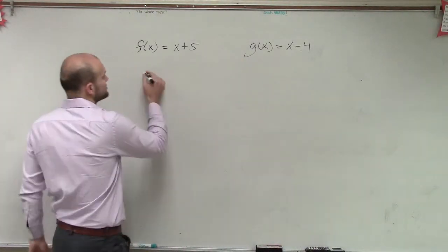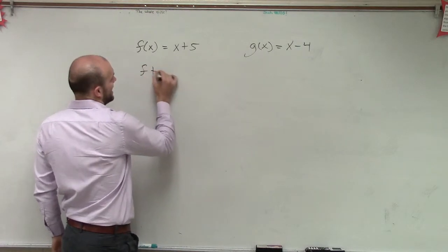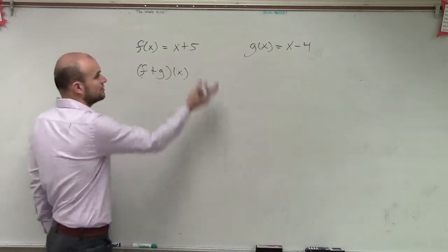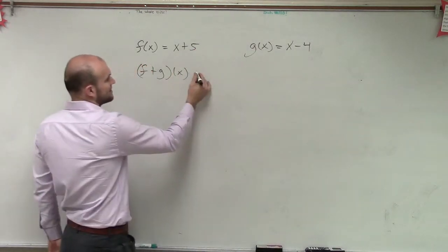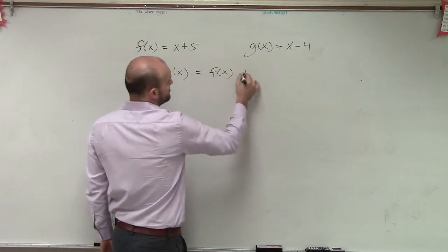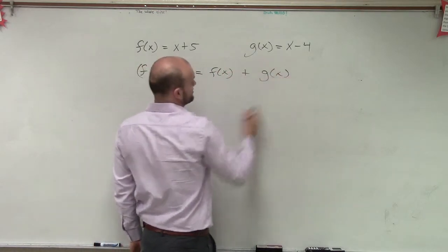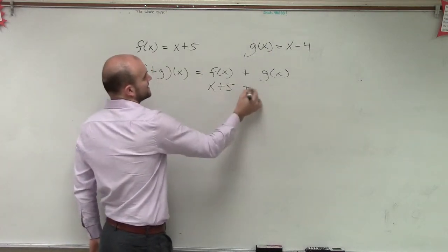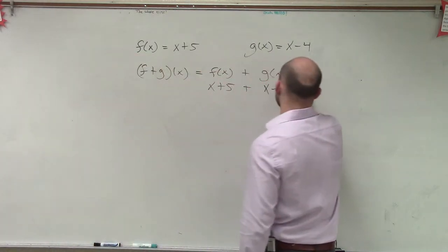So the first one is they asked us to add f plus g of x. The first thing we're obviously going to want to do is just take each one of these functions and add them. So we know that this is going to represent the f of x function plus the g of x function. So we say, well, f of x equals x plus 5, and g of x equals x minus 4.